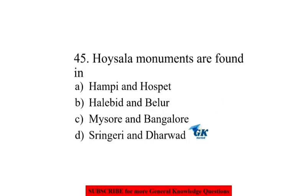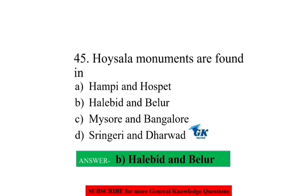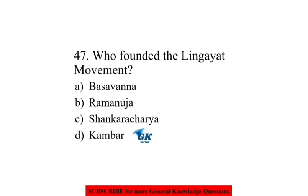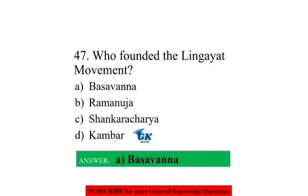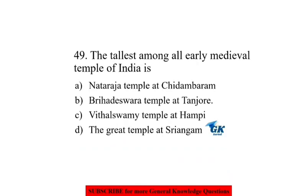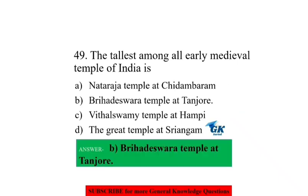Where was the capital of the Chera kingdom? Vanji. Hoysala monuments are found in Halebid and Belur. Where is the famous Virupaksha temple located? Hampi. Who founded the Lingayat movement? Basavanna. How many Jyotirlinga are devoted to Lord Shiva? 12. The tallest among all early medieval temples of India is the Brihadeshvara temple at Thanjavur.